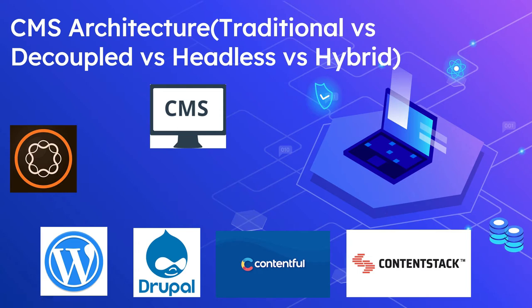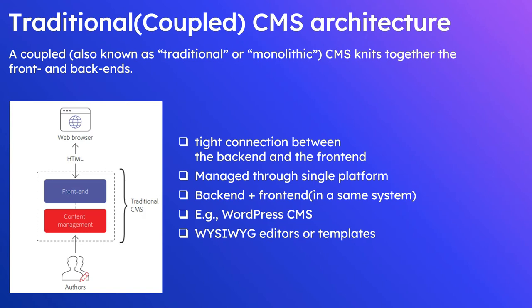Let us now see some of the common CMS architectures. The first one is traditional or coupled CMS architecture, also called monolithic architecture. The coupled CMS knits together the front end and back end. As you can see in this diagram, front end and content management are together. Authors manage the content — create, edit, or publish — and the front end can be accessed through HTML in the web browser.